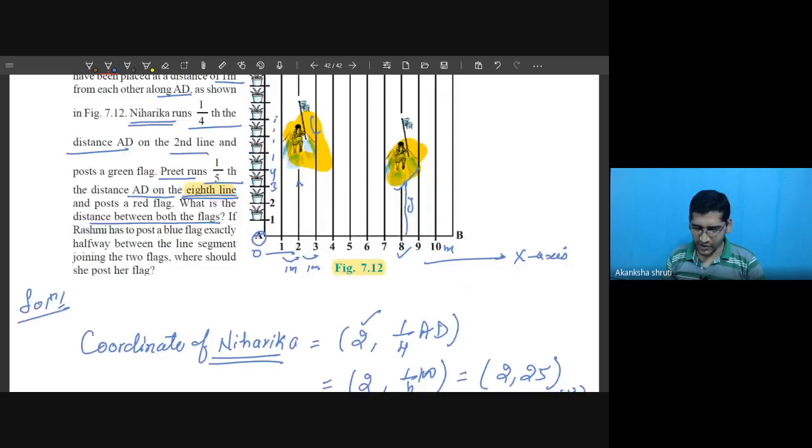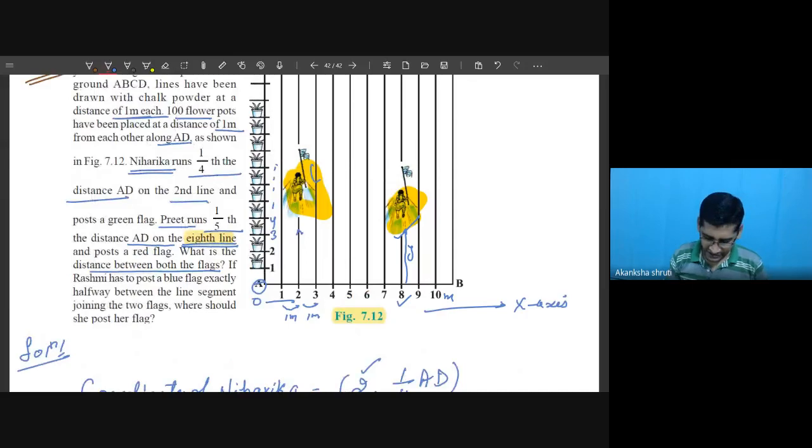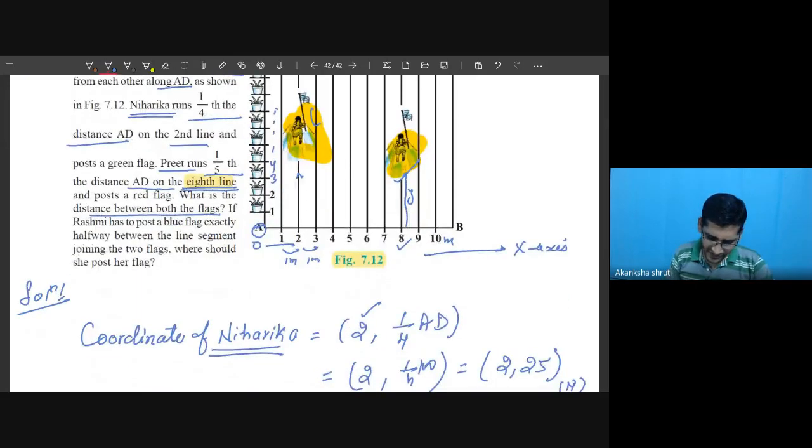This much meter. Unit is important wherever such things are given in unit, so you have to absorb from the question what is the unit and accordingly you have to write. So this is the indication that meter you are getting, now it is given in the meter one meter each.